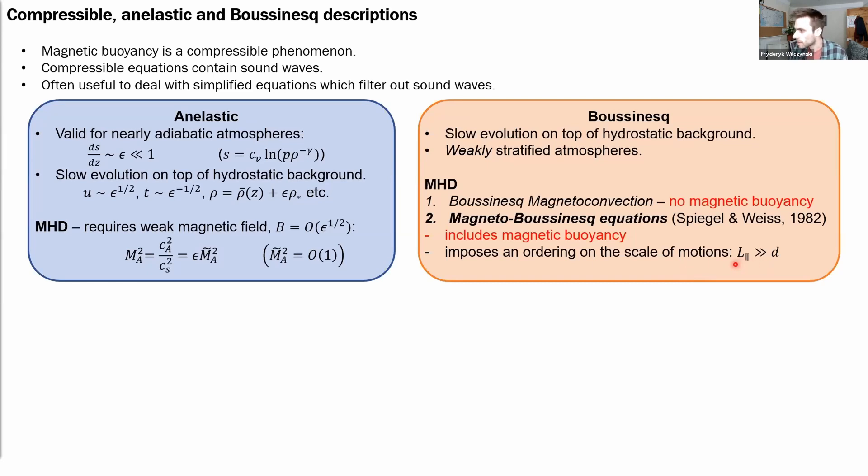you have to assume that the length scale of fluctuation in the direction of the imposed field is much longer than the transverse length scale or the layer depth.